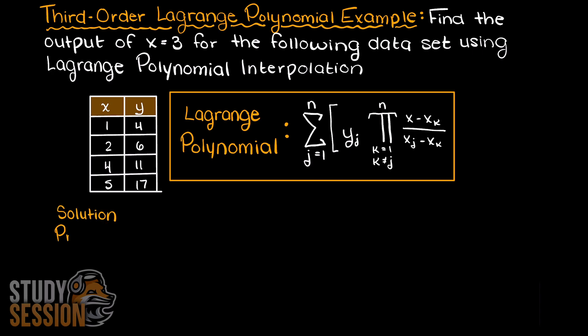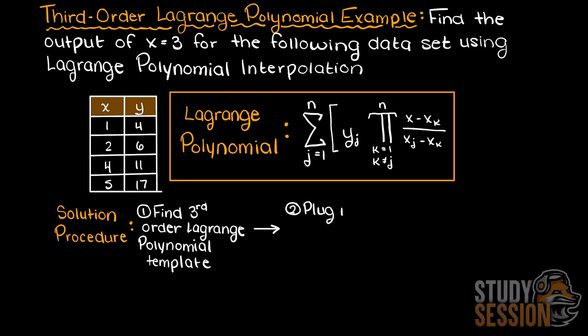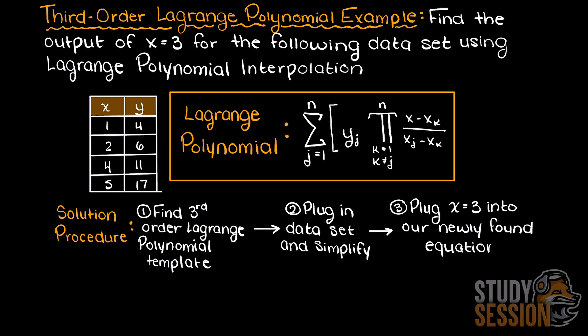Now let's talk about how we solve this problem. We will first begin by using the formula above to develop our general third-order Lagrange polynomial equation. Then we will plug in our known discrete data points, simplify our polynomial, and then lastly, once we have the Lagrange polynomial developed, we can plug in the input we are asked for and finally solve for our output.